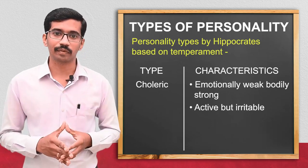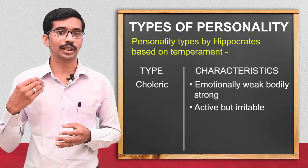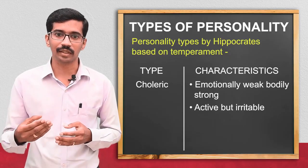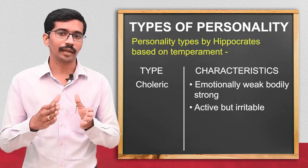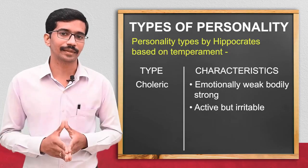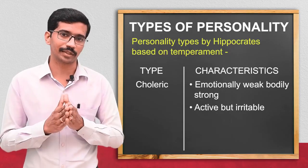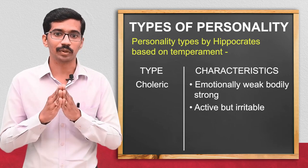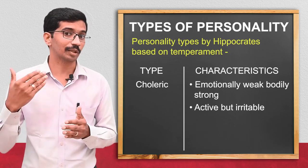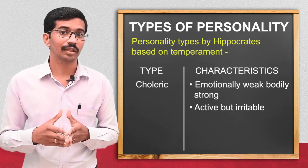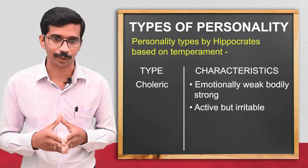Coming to the first one, the choleric type: the person is emotionally weak but bodily very strong. He will be very much active, but because he is emotionally weak, the person will be irritable or very sensitive.